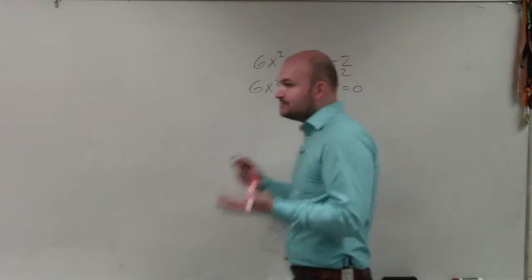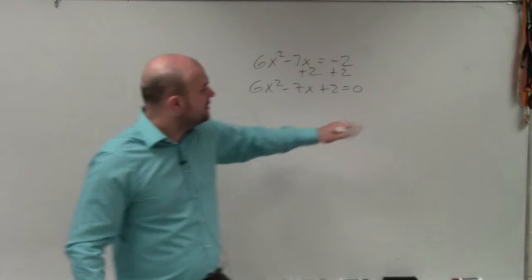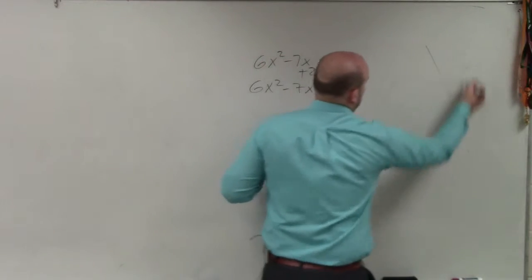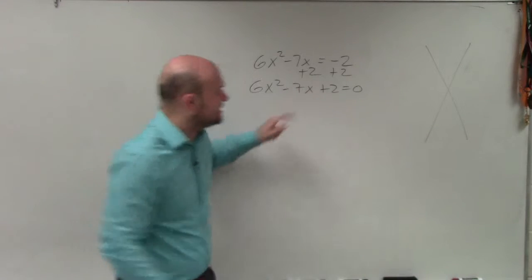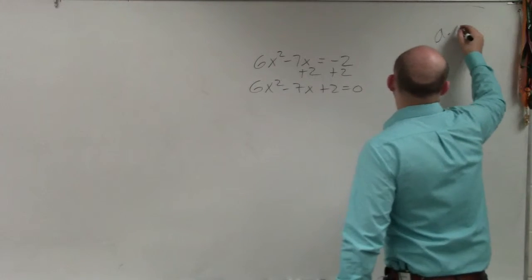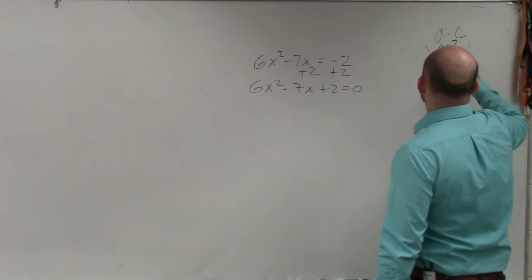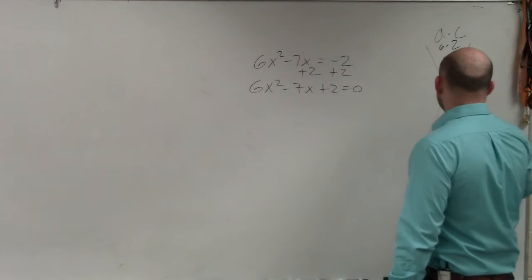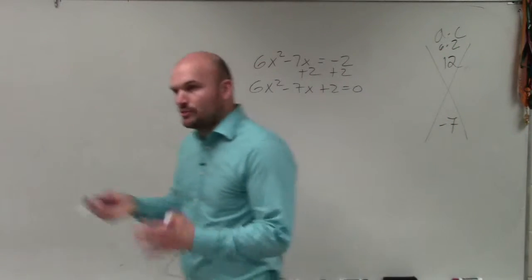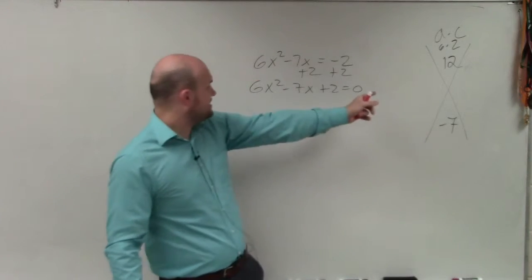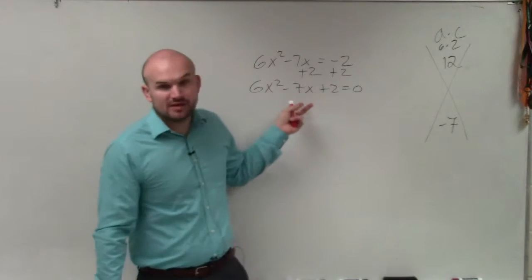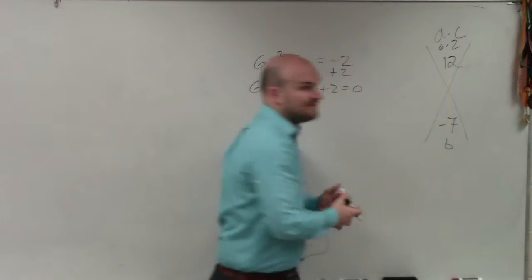Now the next thing we need to do is we need to be able to determine if this is factorable. So to be able to do that, we can use our a times c method, which is a times c, which should be 6 times 2, which is equal to 12, and then b, which is negative 7. So once you multiply your first and your last term, you get 12, positive 12. And then they have to add to give you your middle term, which is b, which is negative 7.